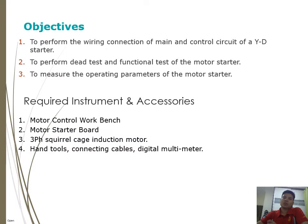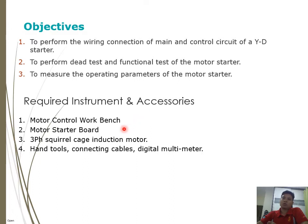The objective of this learning on the star delta connection is to perform the wiring connection of the main and control circuit of the star delta starter, to perform continuity and function tests of the motor starter, and to measure the operating parameters. The required instruments and accessories include a motor control workbench, motor starter board, three-phase squirrel cage induction motor, hand tools, connecting cables, and a digital multimeter.